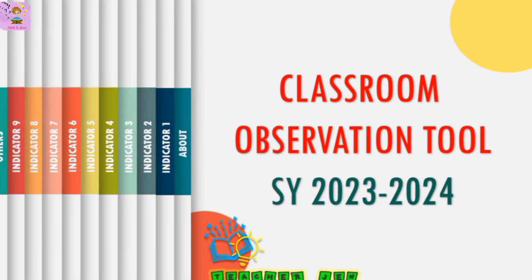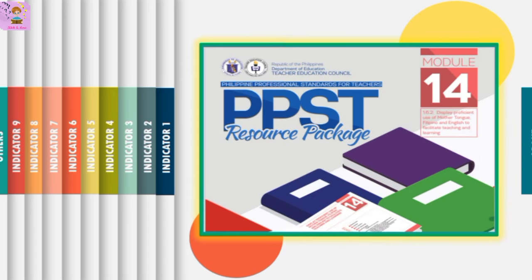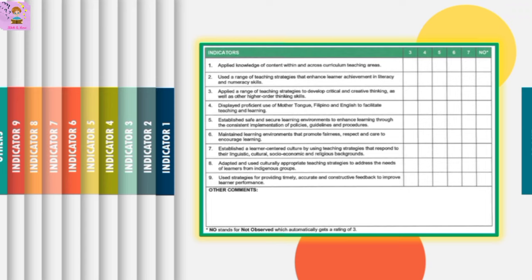Welcome to Kitchen More. In this video, we will discuss the Classroom Observation Tool for Teachers 1 to 3 for school year 2023 to 2024. The basis for the content of this video is stipulated in DepEd Memorandum Number 8, Series of 2023, which is also known as the Multi-Year Guidelines on the Results-Based Performance Management System.